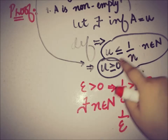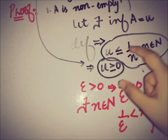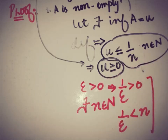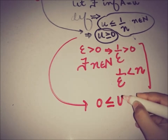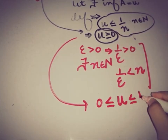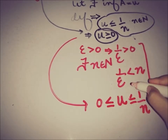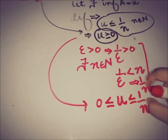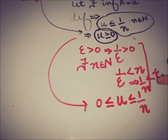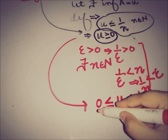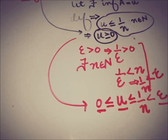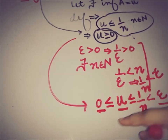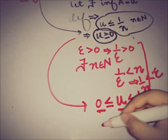We know that u ≥ 0 and u ≤ 1/n. Combining this information: 0 ≤ u ≤ 1/n. From the Archimedean property, 1/ε < n, which taking reciprocals gives 1/n < ε. Therefore 0 ≤ u ≤ 1/n < ε, meaning u lies between 0 and any arbitrary positive number ε.